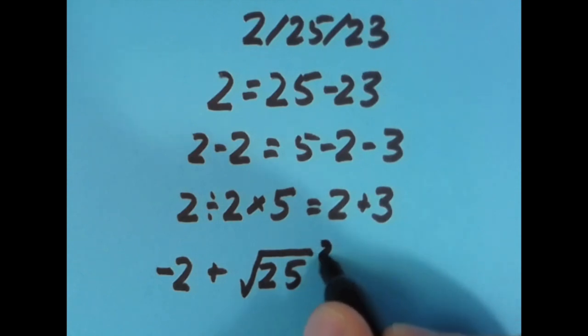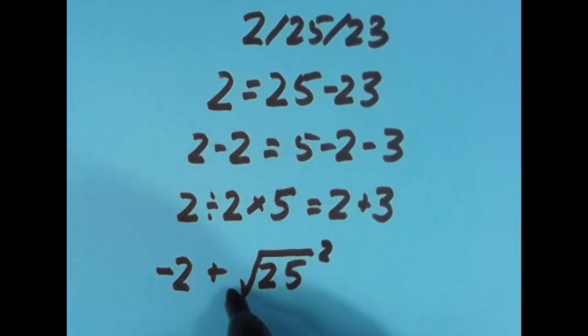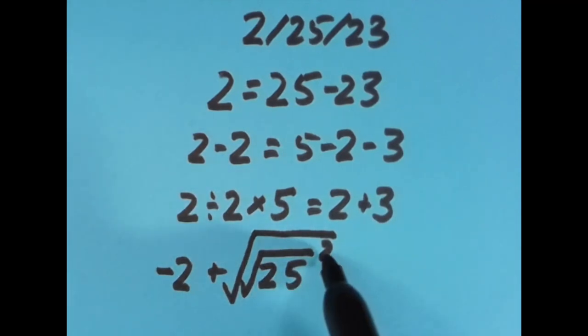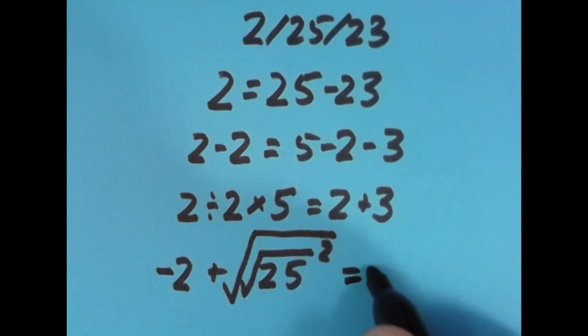Then let's square that 5 to get 25 again. And then let's take the square root of that 25 to get 5. So the square root of 25 is 5, squared is 25, and the square root of 25 is 5. So we have negative 2 plus 5, giving us 3.